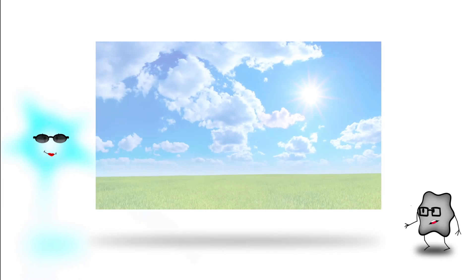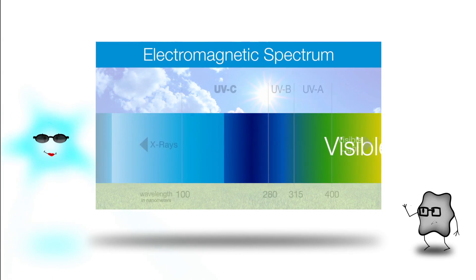Ultraviolet light is a natural component of sunlight. It is a part of the electromagnetic light spectrum that humans can't see.